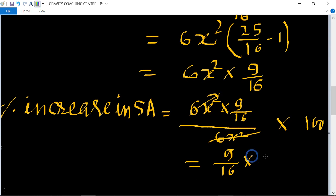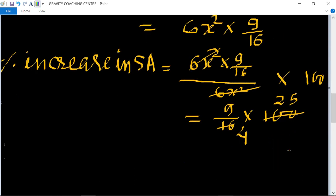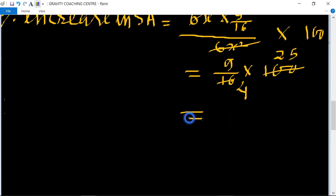Cancel by 4: 16 becomes 4, 100 becomes 25. So 9 × 25 = 225/4.